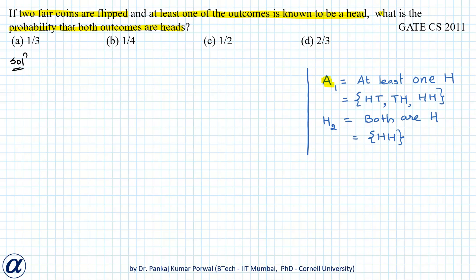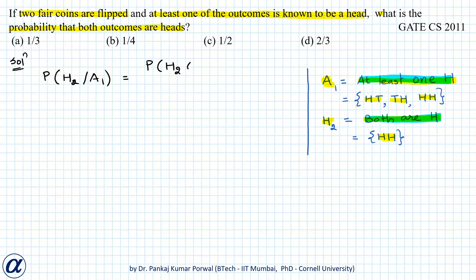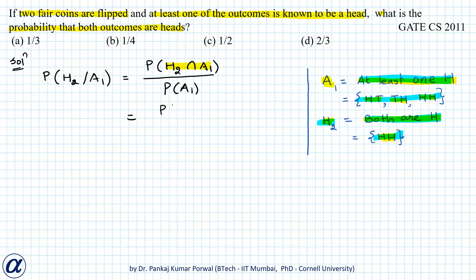Let's define A1 as the event that at least one head is there. In terms of set, it will consist of outcomes head-tail, tail-head, and head-head. Let H2 be the event that both outcomes are head, that is the set containing head-head. We want to find P(H2 | A1), which equals P(H2 intersection A1) divided by P(A1). Since H2 intersection A1 equals H2, this simplifies to P(H2) divided by P(A1).